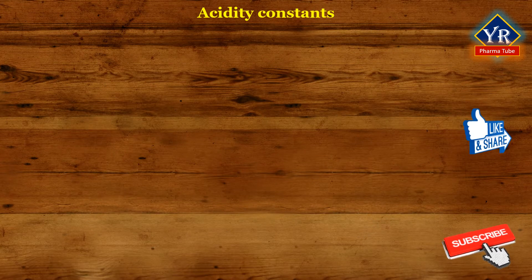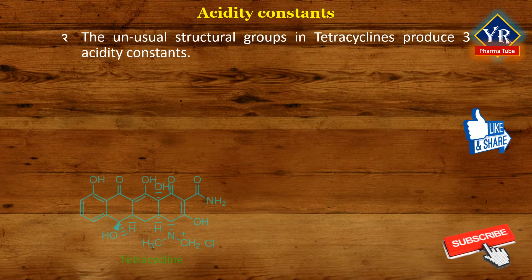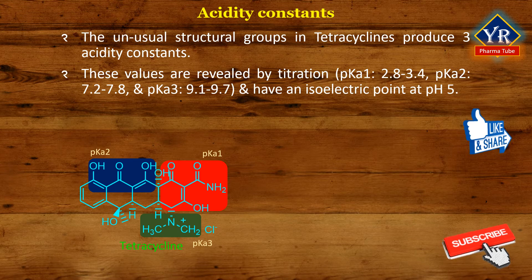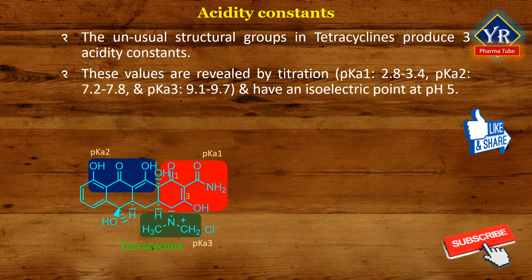Acidity constants of tetracyclines. The unusual structural groups in the tetracyclines produce three acidity constants — pKa1, pKa2, and pKa3 — in aqueous solutions of the acid salts. These values are revealed by titration and have an isoelectric point at about pH 5. The conjugated triene system extending from C1 to C3 of ring A of tetracycline is acidic in nature, with pKa ranging from 2.8 to 3.4, approximately 3.